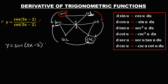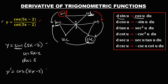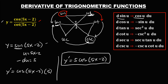To find the derivative using this simplified form: u is 5x minus 2, and du is 5. The derivative of sine is cosine, so we have cosine u, where u is (5x minus 2), times du which is 5. We need to write the constant first, so y′ = 5 cosine(5x minus 2). This is now the derivative.